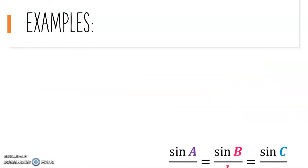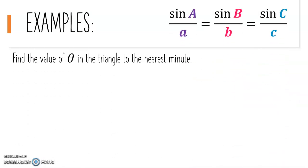Let's look at an example with our rule at the top right-hand corner. We want to find the value of theta in the triangle to the nearest minute. In our triangle, we have theta with the side opposite being 9 meters, and we have 57 degrees with the side opposite being 15 meters.